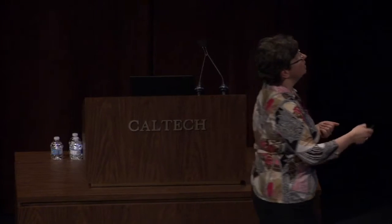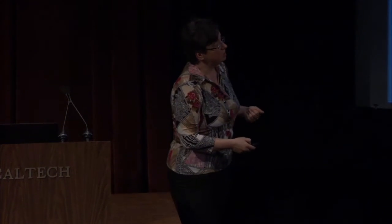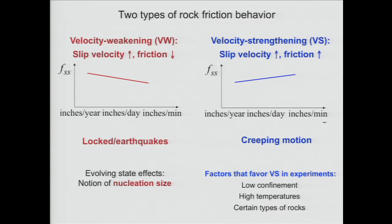What we will talk about is why we have velocity weakening versus velocity strengthening behavior. Factors that favor velocity strengthening in experiments are: first, low confinement — that's why you may have creep next to the free surface; second, high temperatures; and third, certain types of rocks just happen to be velocity strengthening. This sort of velocity strengthening behavior was actually discovered through experiments, because in everyday life we mostly think friction is weakening — it's harder to start motion but then easier to continue.